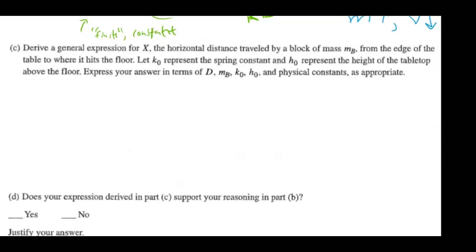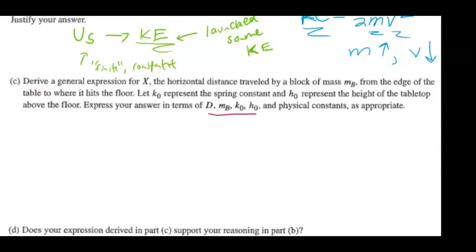So now we want to derive a general expression for x, the horizontal distance traveled by the block of mass mb from the edge of the table to where it hits the floor. Let ko represent the spring constant, ho represent the height of the tabletop above the floor, and express the answer in terms of those variables and physical constants as appropriate. Let's start off with the conservation of energy equation: energy initial at zero is equivalent to energy final. The initial energy of the system is going to be spring potential, and that's going to be converted to kinetic energy. So we can rewrite this in variable form — the spring potential equation is one half kx squared.